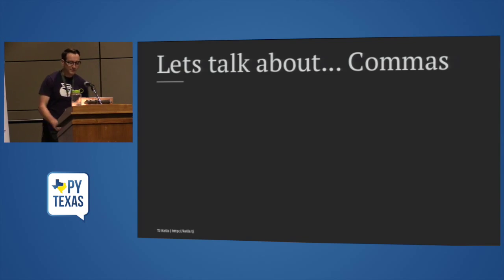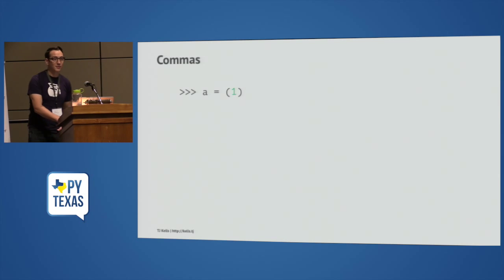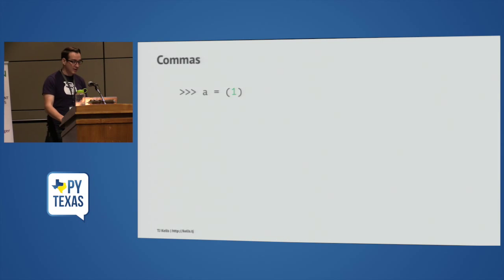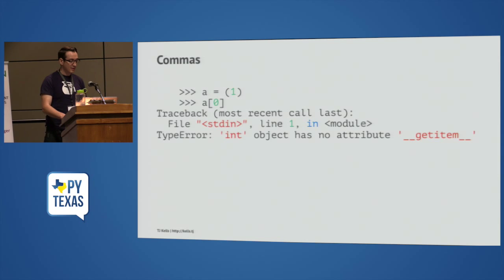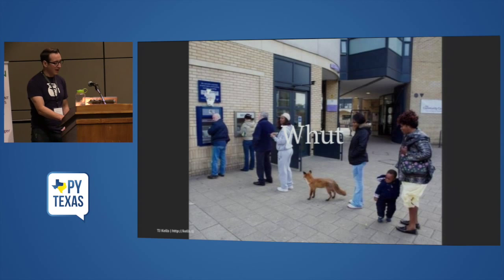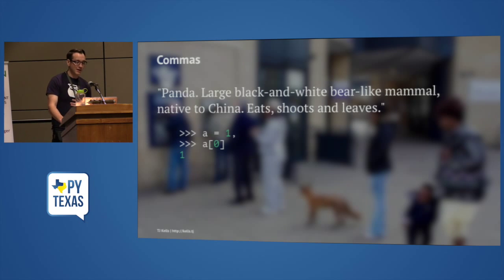Let's talk about commas. Sometimes in my very important job I get to work on big data. I have a tuple with one value in it, and I wanted to get that first value out. It turns out that tuples actually don't have a lot to do with parentheses — parentheses are there for us human beings. Much like in English, the comma is important.